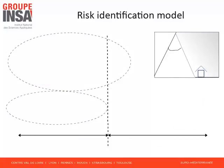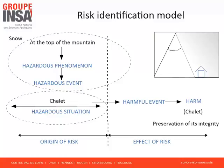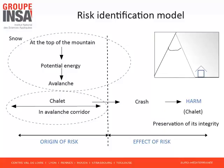Consider the following circumstances: the top of a mountain is covered with snow and a chalet is built in the valley. We are the owner of the chalet. Our objective is to preserve our asset — the chalet — in good condition. Consequently, the target is the chalet and the objective is to preserve its integrity. The hazard comes from the mass of snow; the snow is the actor. The snow is at the top of the mountain — it is a hazardous property of the snow, since snow in the valley would never damage the chalet. The associated phenomenon is potential energy. An avalanche is a hazardous event. If the chalet is located in an avalanche corridor, its situation is hazardous. If the snow crashes into the house, then the crash is a harmful event and the harm is the destruction of the chalet.